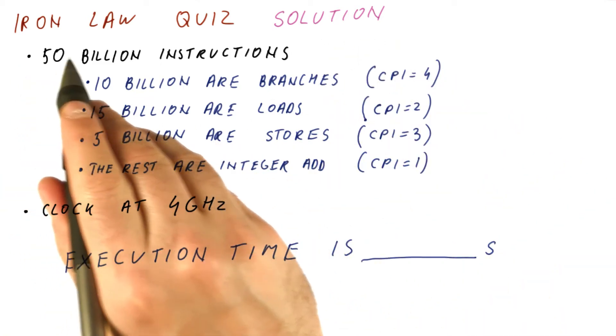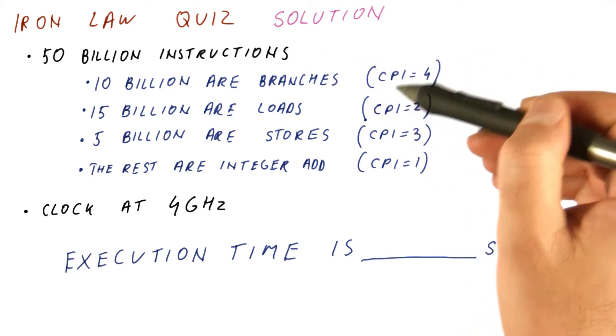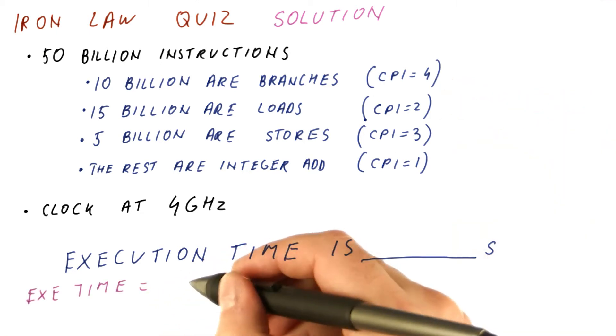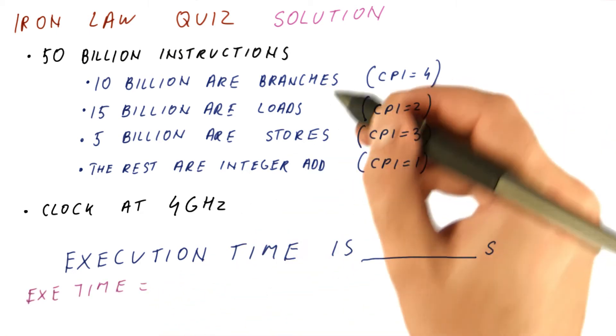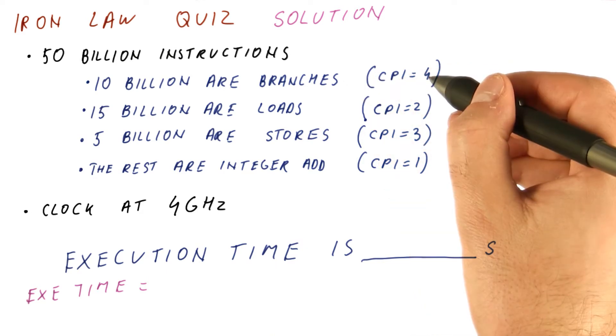Let's discuss the solution for our newest iron law quiz. We have 50 billion instructions with different CPIs. So clearly, we need to use our newest version of the iron law of performance. Execution time is a sum of number of instructions of a particular type times the CPI for that type.